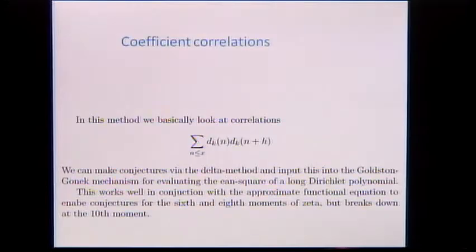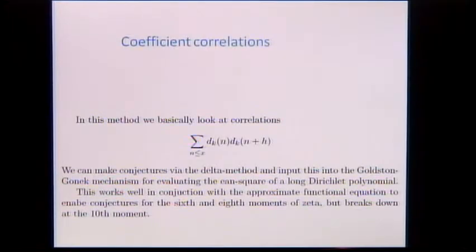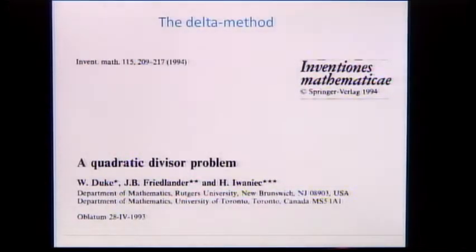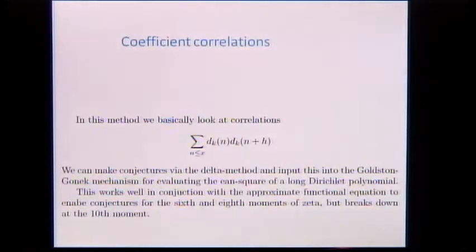Number theorists do not know how to do these coefficient correlations — sum of d_k(n) · d_k(n+h) — asymptotically when k is three or more. D_k(n) is the nth coefficient of ζ(s)^k. We don't know how to prove these when k ≥ 3, unfortunately, but we do know how to conjecture them. The simplest way is the delta method of Duke, Friedlander, and Iwaniec from their paper on the quadratic divisor problem.